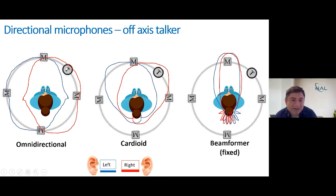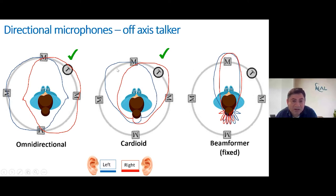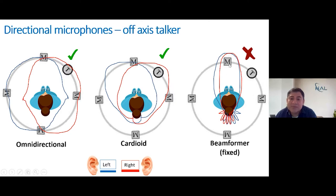Let's consider what happens when the target moves to the side. We have moved the target to the side in the same layout, and we see that the omnidirectional system still captures that sound even though it has moved to the right — it has no problem doing that. The cardioid is also able to capture that sound location, so the listener can hear effectively. There are some differences between the two, but for the most part the effect is not that different between omni and cardioid for a target moved to the right.